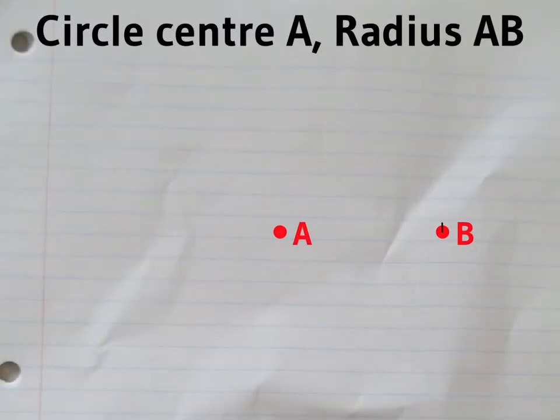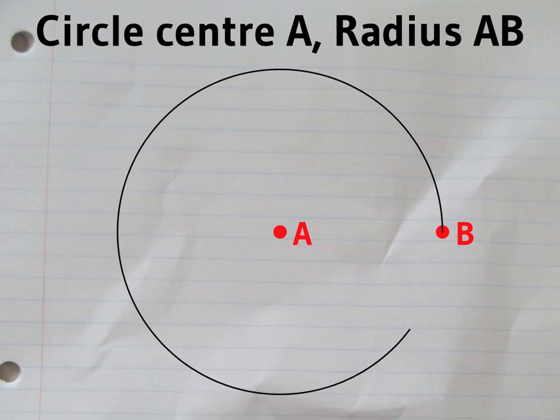First, set your compass to the length AB and draw a circle centered on A.